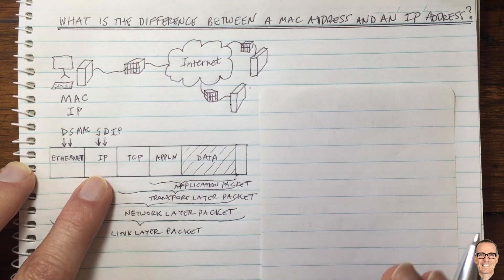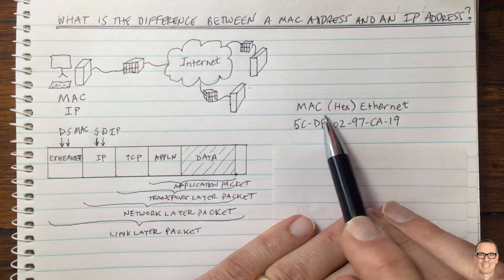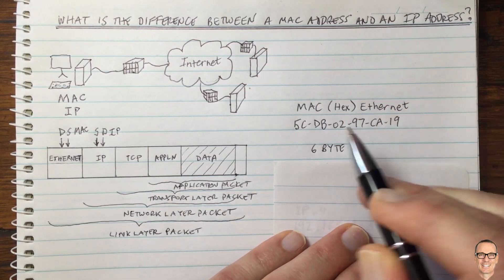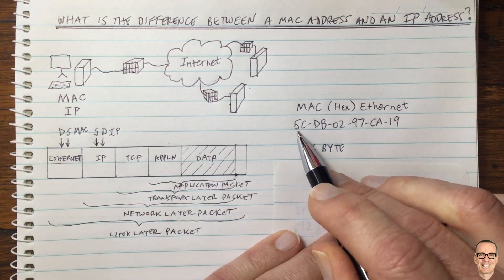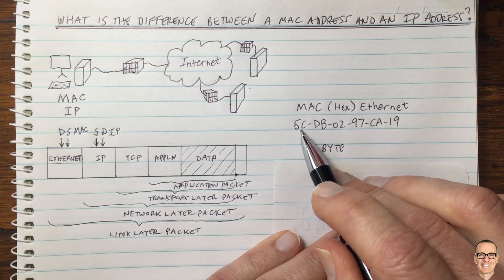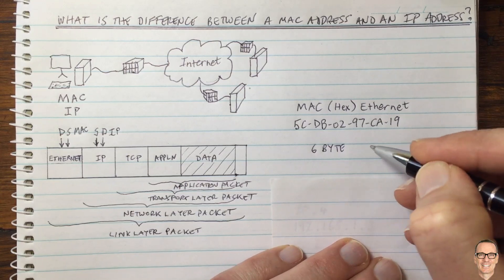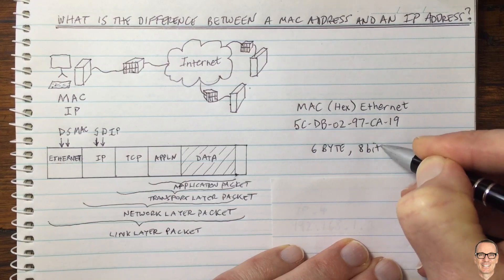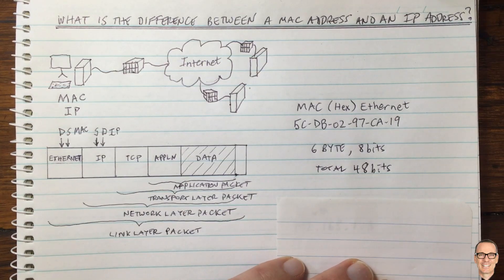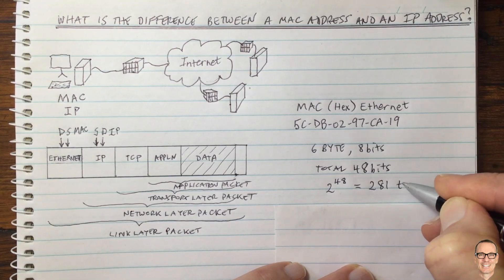Why do we need both? A MAC address is made up of six bytes, each represented in hexadecimal — the numbers 0 to 9 and then A through F, giving 16 possible values per character. Each pair represents one byte of 8 bits, giving a total of 48 bits per MAC address. That means there are 2 to the power of 48 possible MAC addresses, which equals 281 trillion addresses.